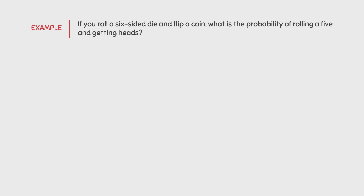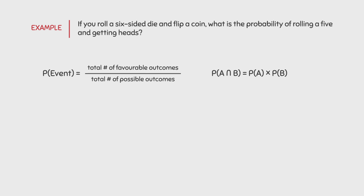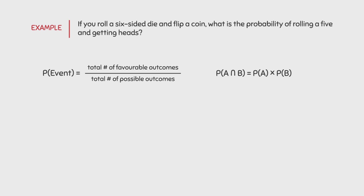Let's do an example. If you roll a 6-sided die and flip a coin, what is the probability of rolling a 5 and getting heads? The first thing we should do is write down the formula. But in order to use this formula, we need to know the probabilities of each event. The probability of an event is equal to the total number of favorable outcomes divided by the total number of possible outcomes.